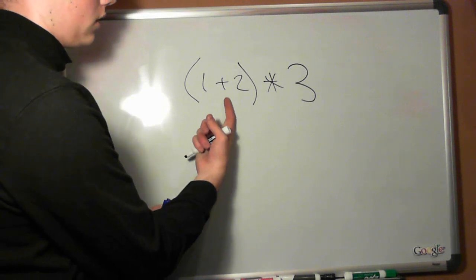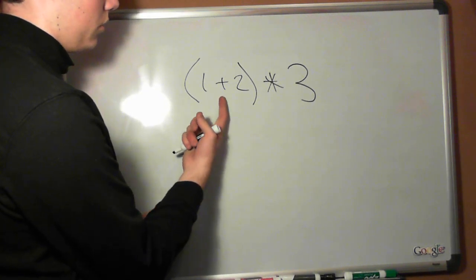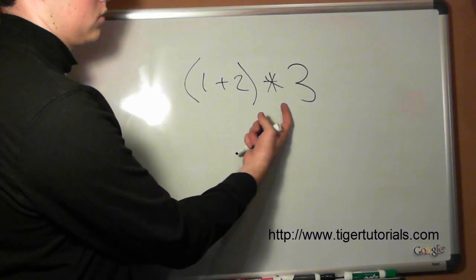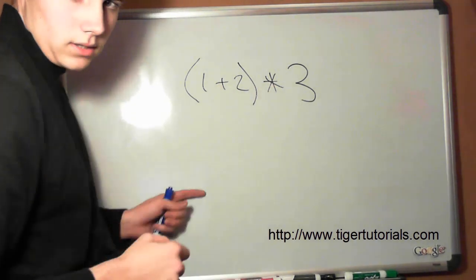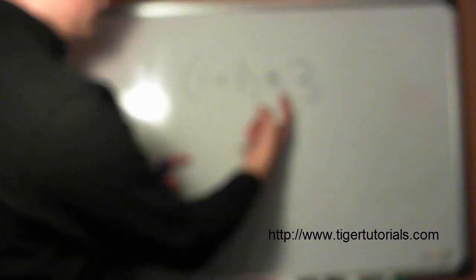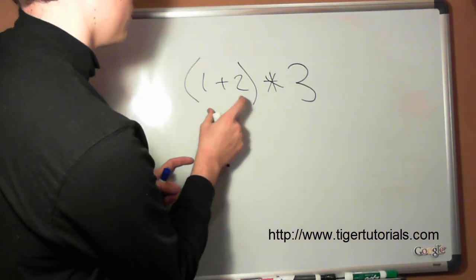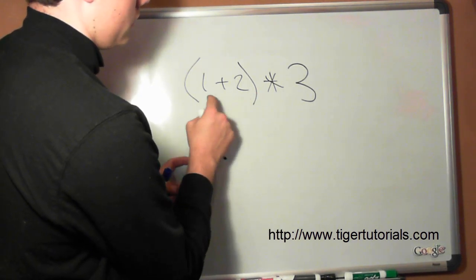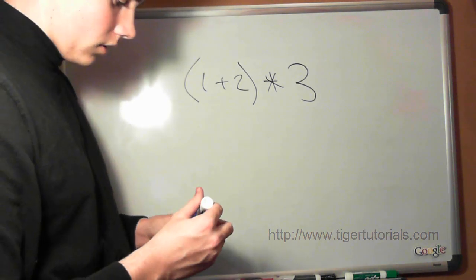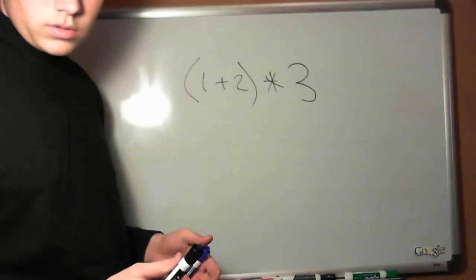Now prefix means that we're taking this operator and moving it up one position. But it's not that simple. Some of these operators are intermingled between these ones and twos. The way that we can decipher this is by using a binary tree.